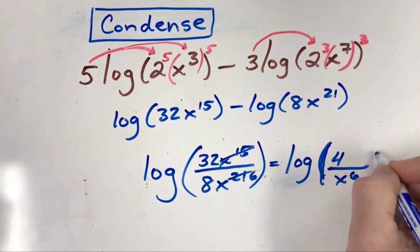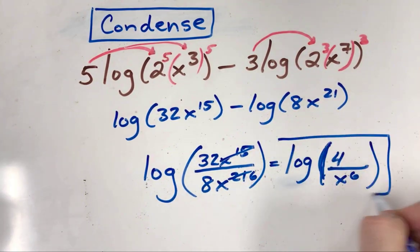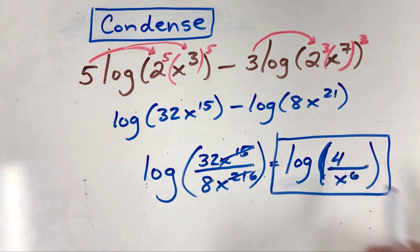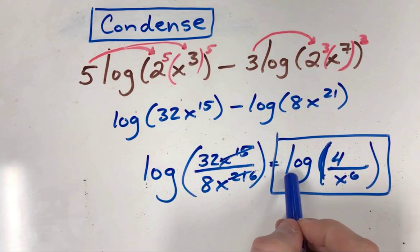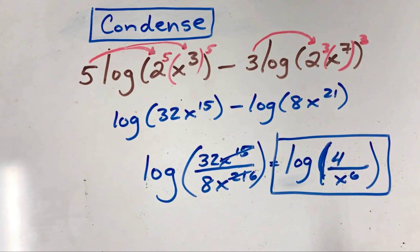Your final answer is log of four divided by x to the sixth. Remember, when we condense logs, we want them down to one log, everything inside, and reduced as far as possible. Hopefully this video helps, and good luck.